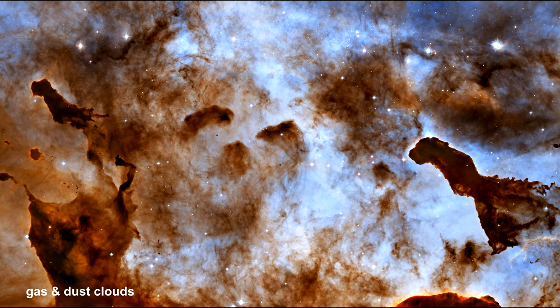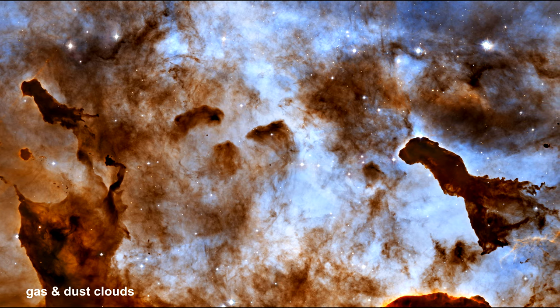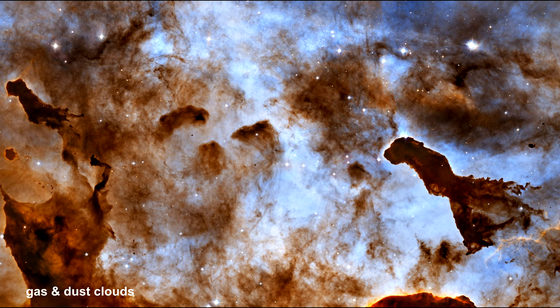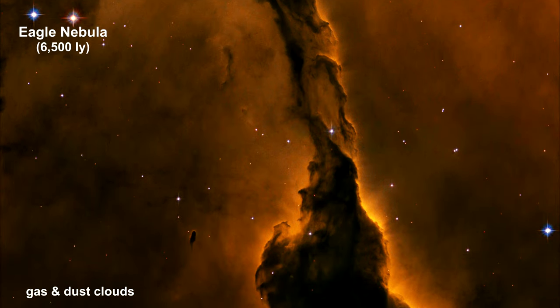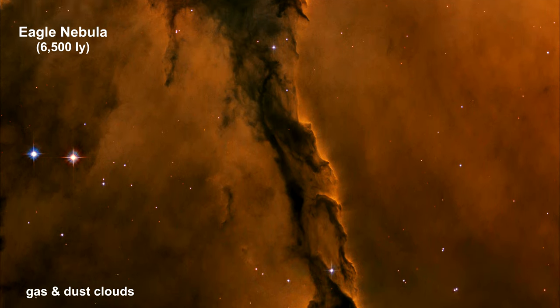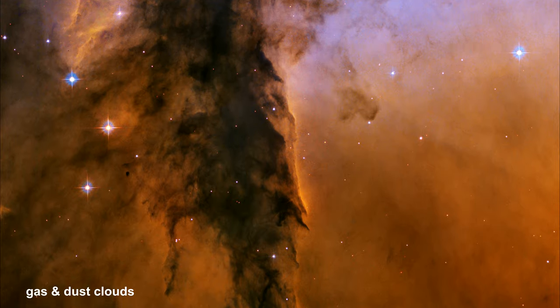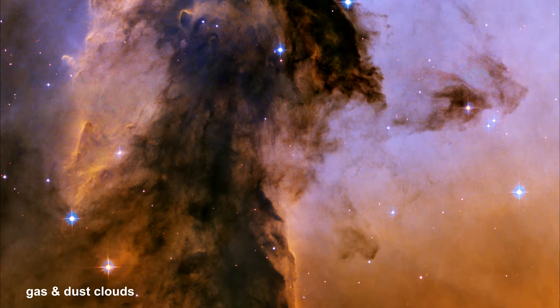These are the best objects to analyze for three reasons. One, they trace out the spiral arms. Two, we can see them clearly at great distances using radio astronomy. And three, there is a good way to calculate their distance for the inner part of the galaxy.